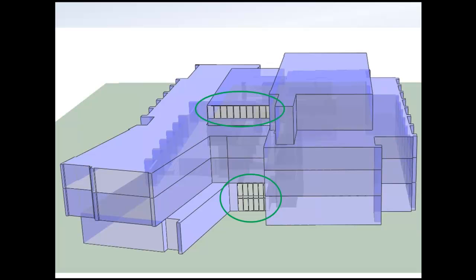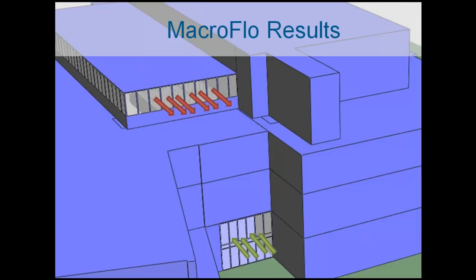The areas that are circled are the operable window openings. We have operable windows on the first floor and also at the very top of the atrium on both the east and the west side of the building. We were looking at the amount of area for those operable windows compared to the air movement that would be available.